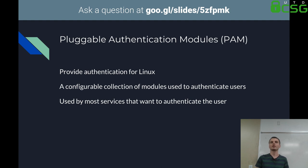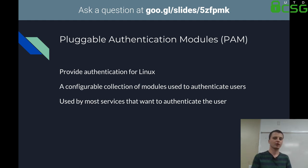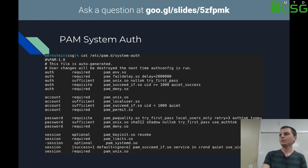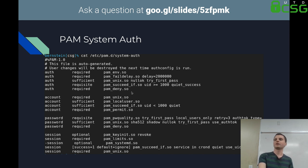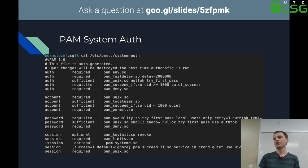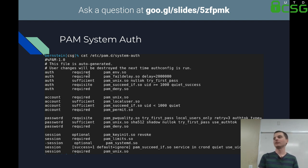If someone modifies your PAM configuration, they can do some pretty malicious things. Almost every service that wants to authenticate you — your lock screen, display manager, SSH, sudo, su — all back into PAM. A PAM config has four stacks: auth, account, password, and session. In the auth stack, modules have different control directives. 'Required' means if the module fails, the entire stack fails. 'Sufficient' means if you pass, you're immediately authenticated.